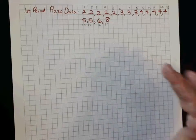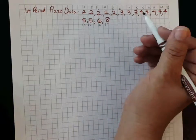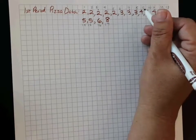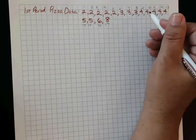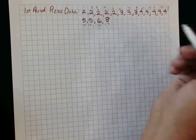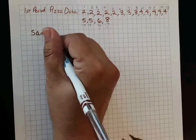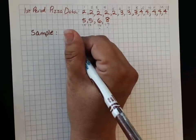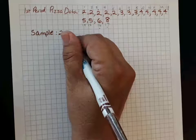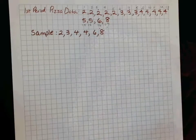I used a random number generator and it told me to pick 0.3, 0.7, 0.9, 0.13, 0.16, and 0.17. So I'm taking my sample from my population of first period and I'm going to get 2, 3, 4, 4, 6, and 8.